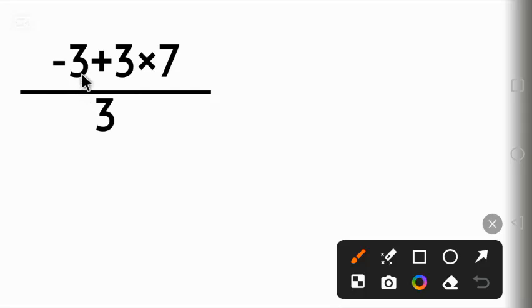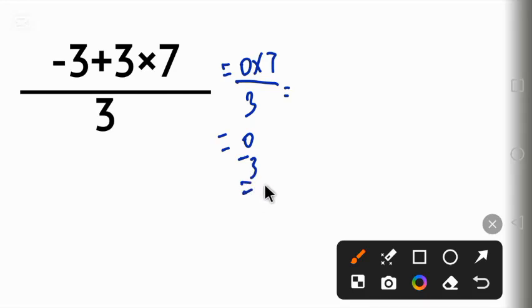At a glance you'll be tempted to work the numerator by doing the minus 3 plus 3 which gives us 0 times 7 and then make everything all over 3. Now 0 times 7 will give 0 over 3 equal to 0.